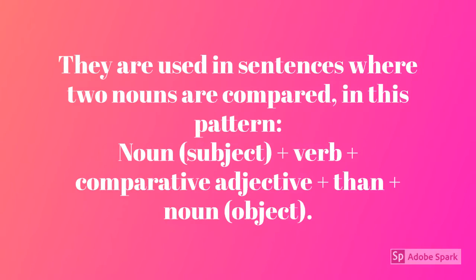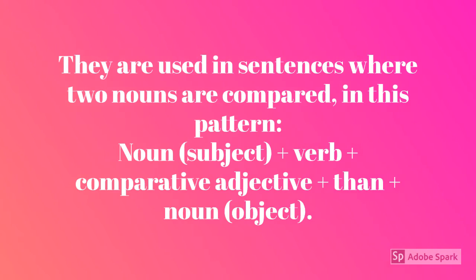So, to make this grammar, it's important that we include a noun and a verb, and then the comparative adjective, like we talked about earlier, and then another object. So, for example, here we could say that I am bigger than my friend.